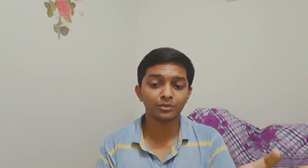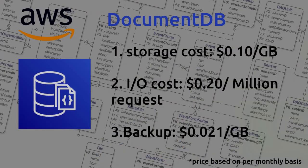Let me show the pricing structure. For DocumentDB, it starts around 10 cents per GB every month. The request cost is around $0.20 or 20 cents per million requests every month, and the backup cost is around $0.021 per GB every month. It's fairly cheap. For more pricing details you can go to the AWS site — the link is always in the description.